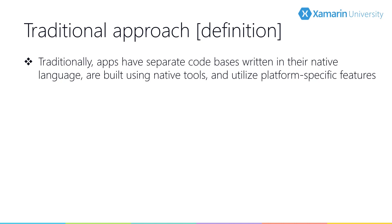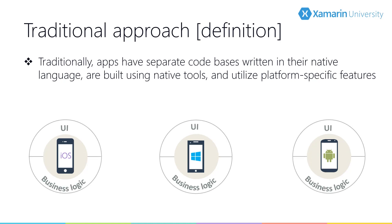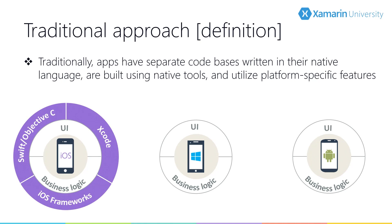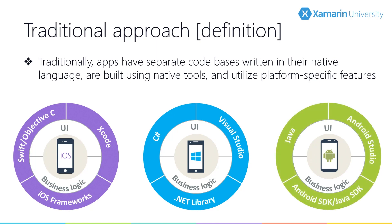You need to reach your users, and you know they want to use a native app — so how do we go about it? Let's focus on the three big ecosystems: iOS, Windows, and Android. Writing apps means adding business logic and creating a UI. Using the traditional development approach, we build our iOS app using Objective-C or Swift in Xcode, our Windows app using C# in Visual Studio with the .NET library, and our Android app using Java or Kotlin in Android Studio using the Android SDK and the Java SDK.